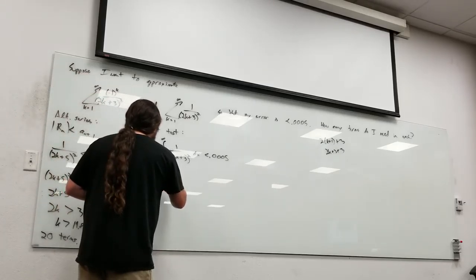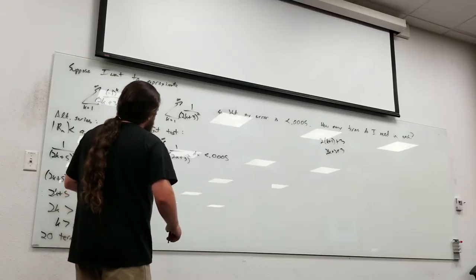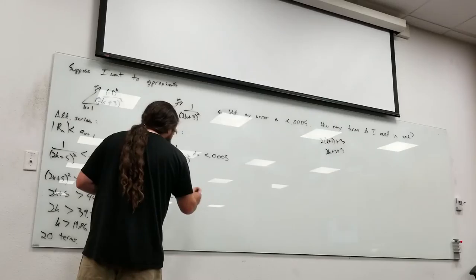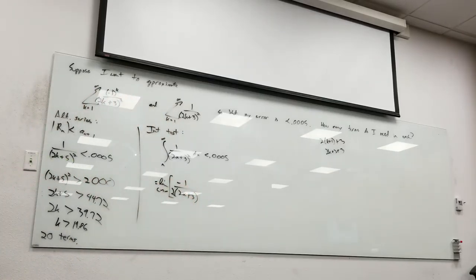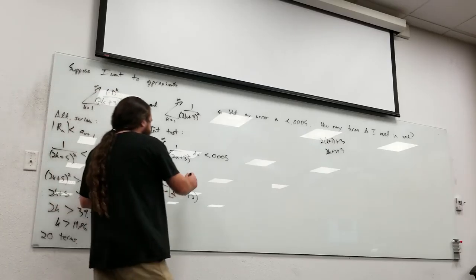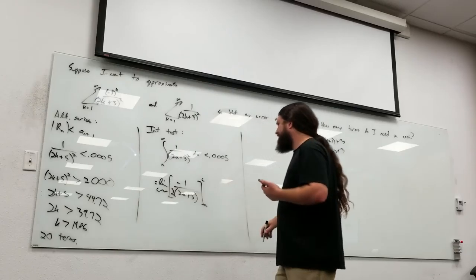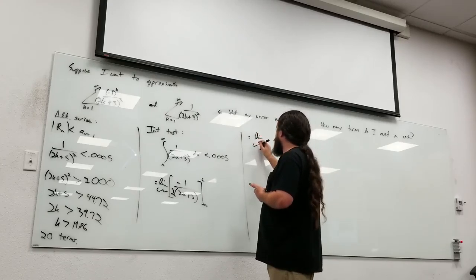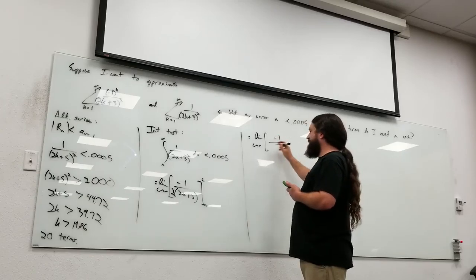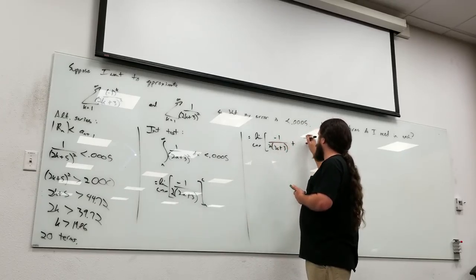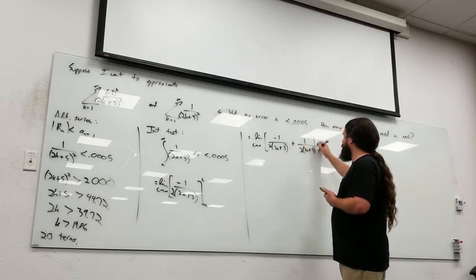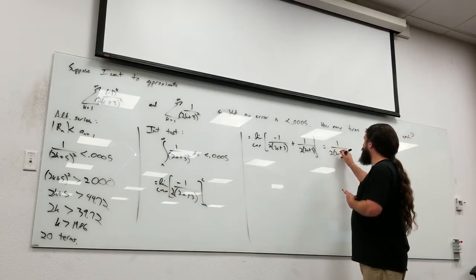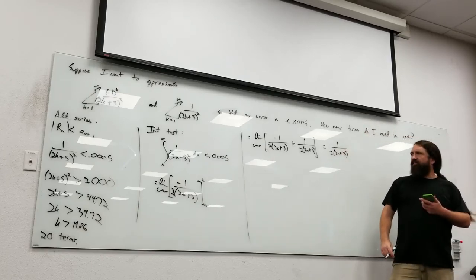You see we're going to get a lot bigger number from this one. If I integrate this guy, what I've got is the limit as c goes to infinity of negative 1 over 2x plus 3, that would be divided by 2 from chain rule. So I've got negative 1 over 2 times 2x plus 3, that's evaluated at n and c. This is the limit as c goes to infinity of negative 1 over 2 times 2c plus 3 plus 1 over 2 times 2n plus 3. Now the c is the only thing going to infinity, so this is just 1 over 2 times 2n plus 3.